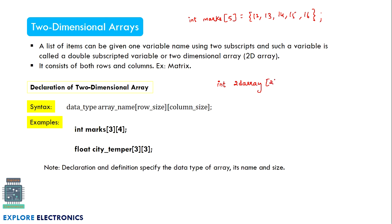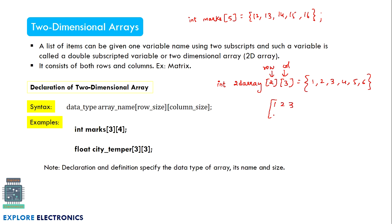In a two-dimensional array we might declare it as a[2][3] and assign values 1, 2, 3, 4, 5, and 6. Imagine a matrix having two rows and three columns — the first index represents rows and the second represents columns. So the values fill as 1, 2, 3 in the first row and 4, 5, 6 in the second row.